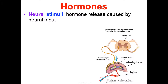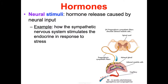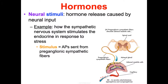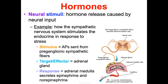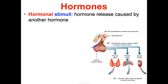Neural stimuli cause hormones to be released due to neural input. For example, the sympathetic nervous system stimulates the endocrine system in response to stress. Action potentials from preganglionic sympathetic fibers target the adrenal gland, and the adrenal medulla then secretes epinephrine and norepinephrine to aid in the fight-or-flight response.